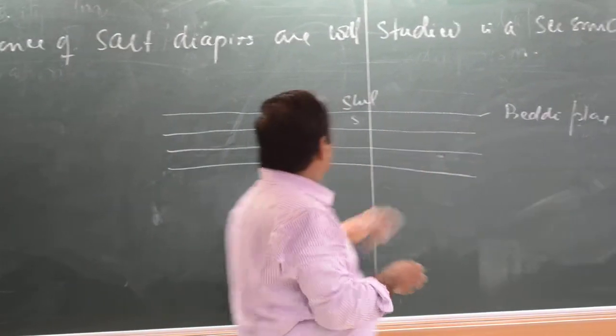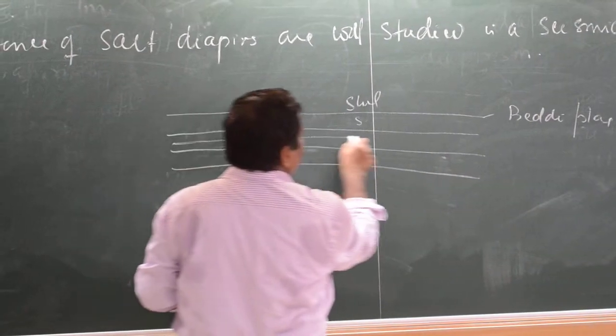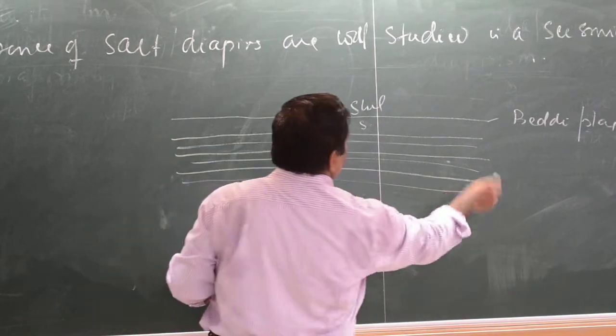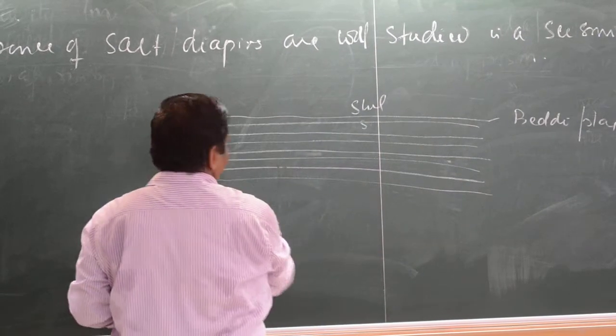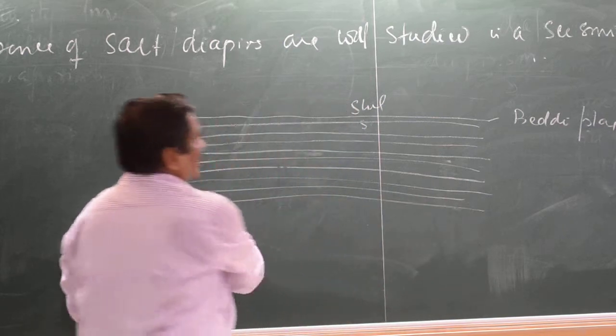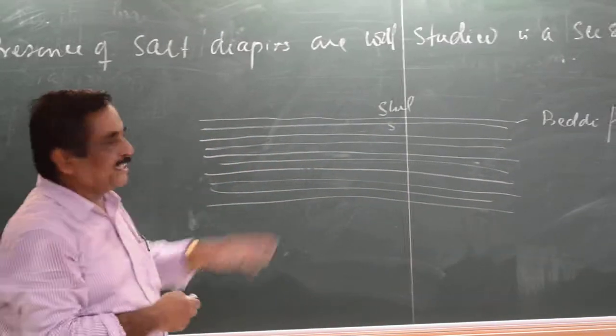That is the bedding plane, so you will get a lot of horizontal lines in this seismic profile. These are reflecting surfaces indicating the density contrast.